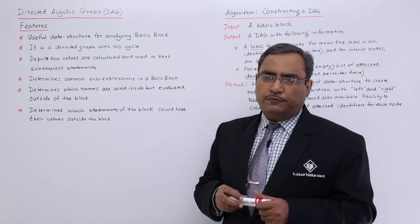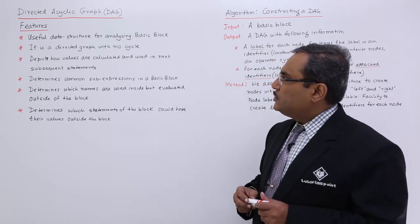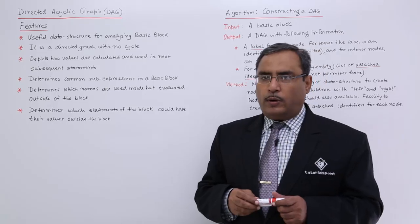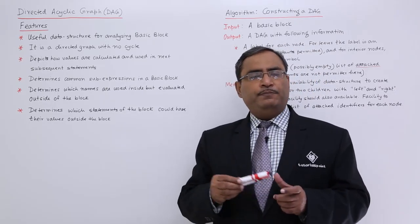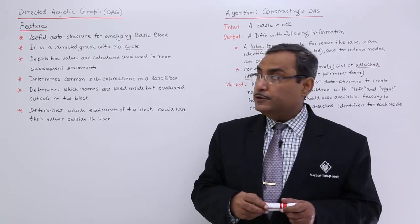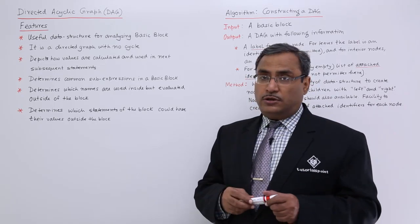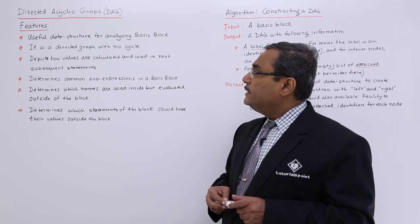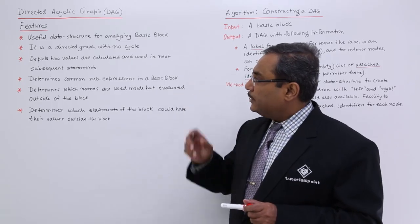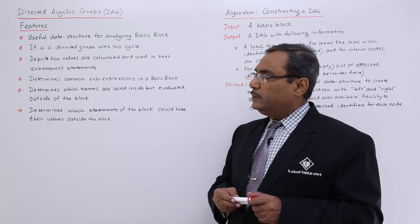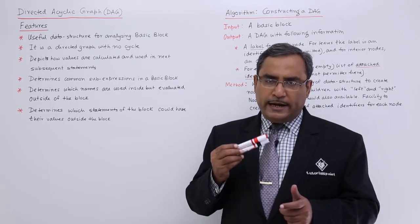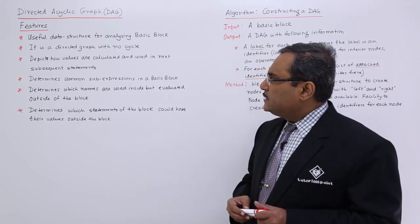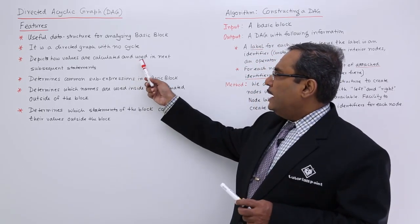Let us go for the features. DAG is a useful data structure for analyzing a basic block. What is a basic block, what is a leader — we have discussed that in our earlier videos. It is a data structure, and obviously a graph is a data structure, useful for analyzing basic blocks. Next point: it is directed with no cycle.